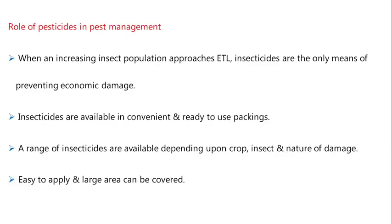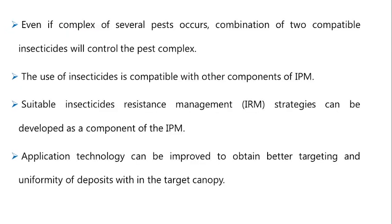When an increasing insect population approaches the economic threshold level, insecticides are the only means of preventing economic damage. Insecticides are available in convenient and ready-to-use packings, and a range of insecticides are available depending upon the crop, pest, and nature of damage. Even if a complex of several pests occurs, a combination of two compatible insecticides will control the pest complex. The use of insecticides is compatible with other components of integrated pest management (IPM), and suitable insecticide resistance management (IRM) strategies can be developed as a component of IPM. Application technology can be improved to obtain better targeting and uniformity of deposits within the target canopy.